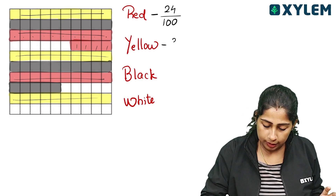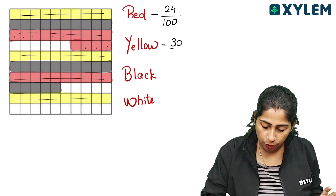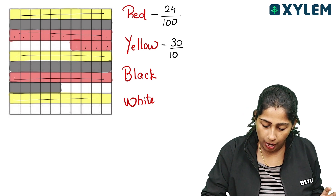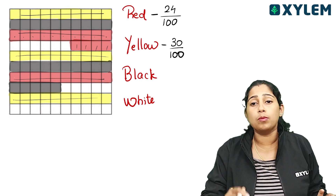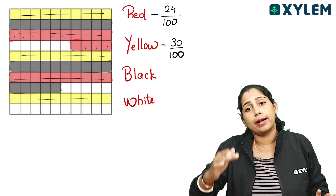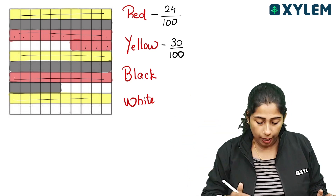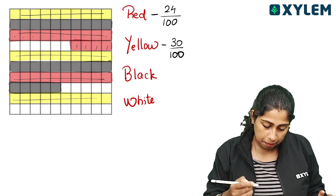There are 30 blue boxes out of 100. There are 30 boxes. How many yellow boxes are there?